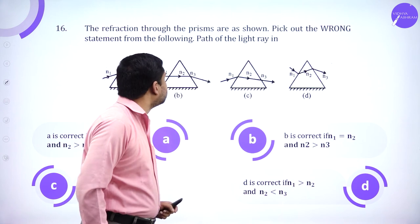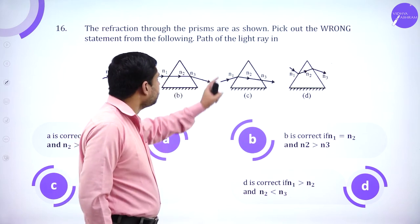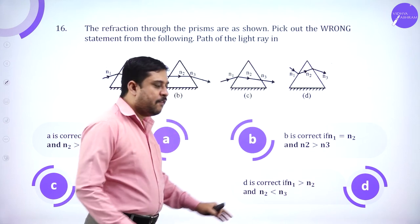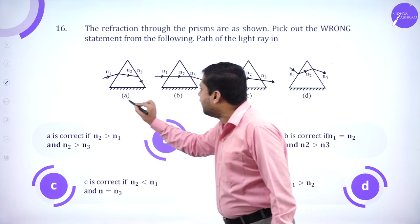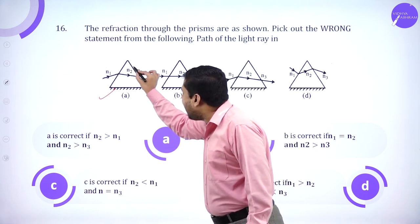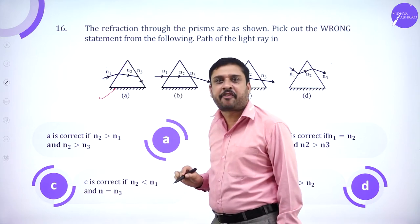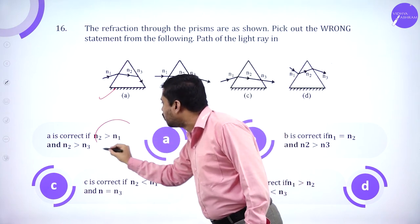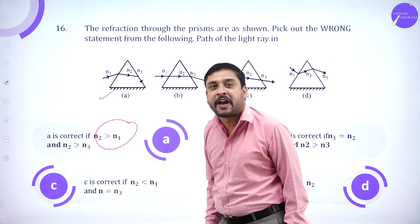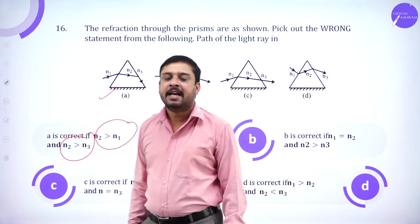Four diagrams show refraction through a prism — pick out the wrong statement from the following. Analysing the path of the light ray carefully: at the second surface, if the ray is passing through the surface, then N₂ must be greater than N₁. At the first surface, light is getting refracted, so N₂ is greater than N₃. Option A is the correct answer.